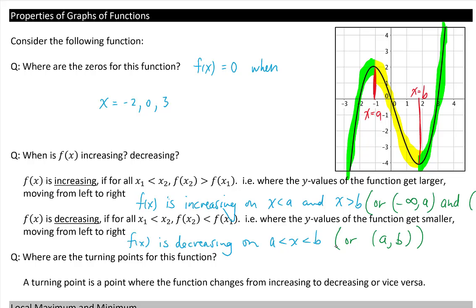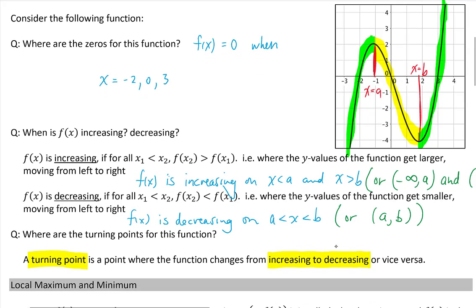Where are the turning points for this function? A turning point is defined as a point where the function changes from increasing to decreasing, or from decreasing to increasing. On this graph we have two turning points — they are at x equals a and at x equals b, shown here and here.